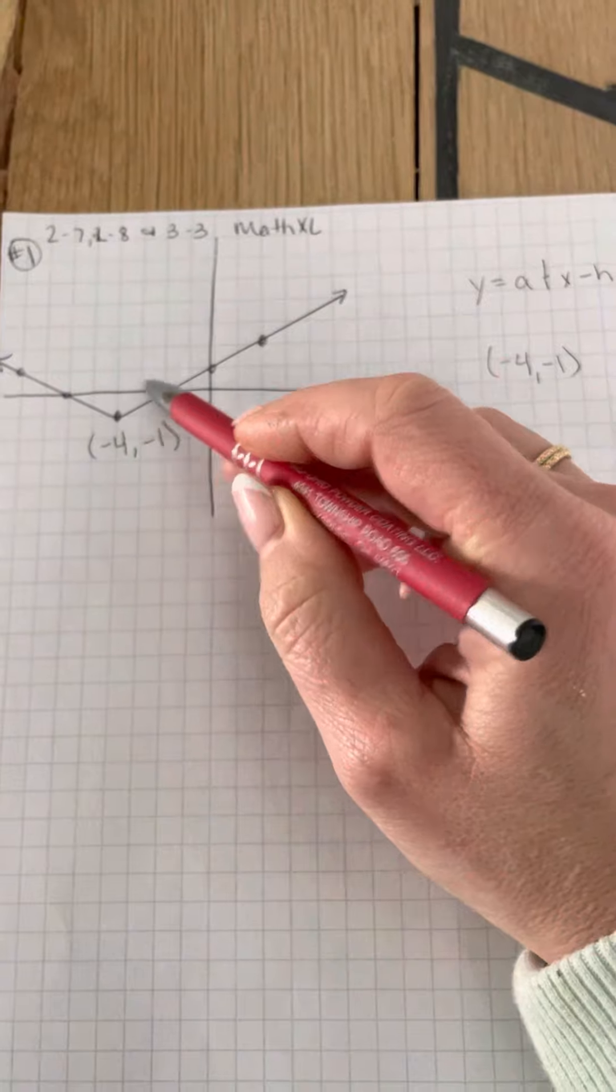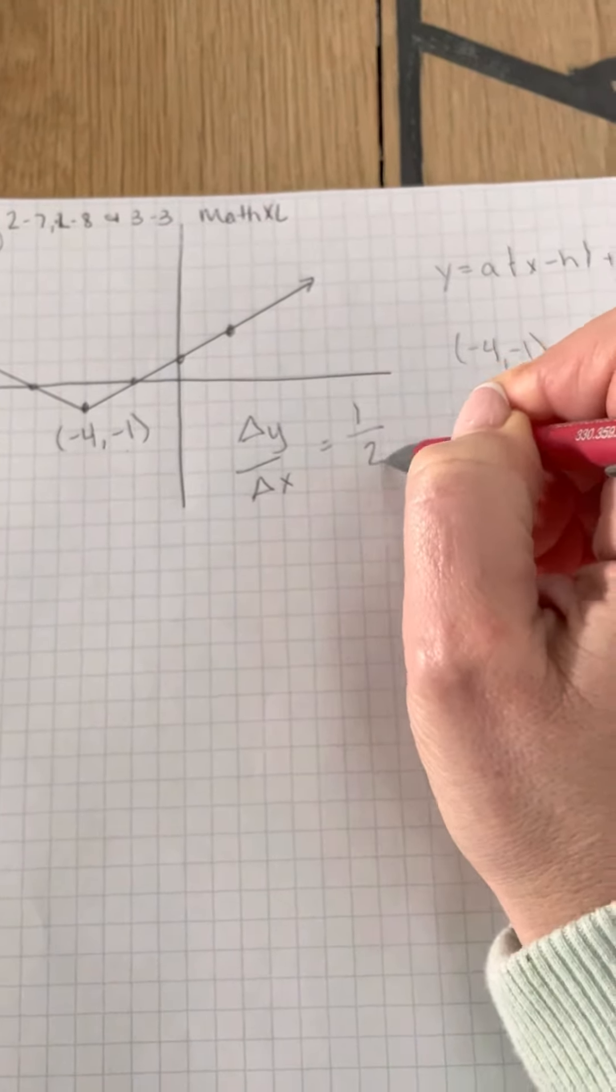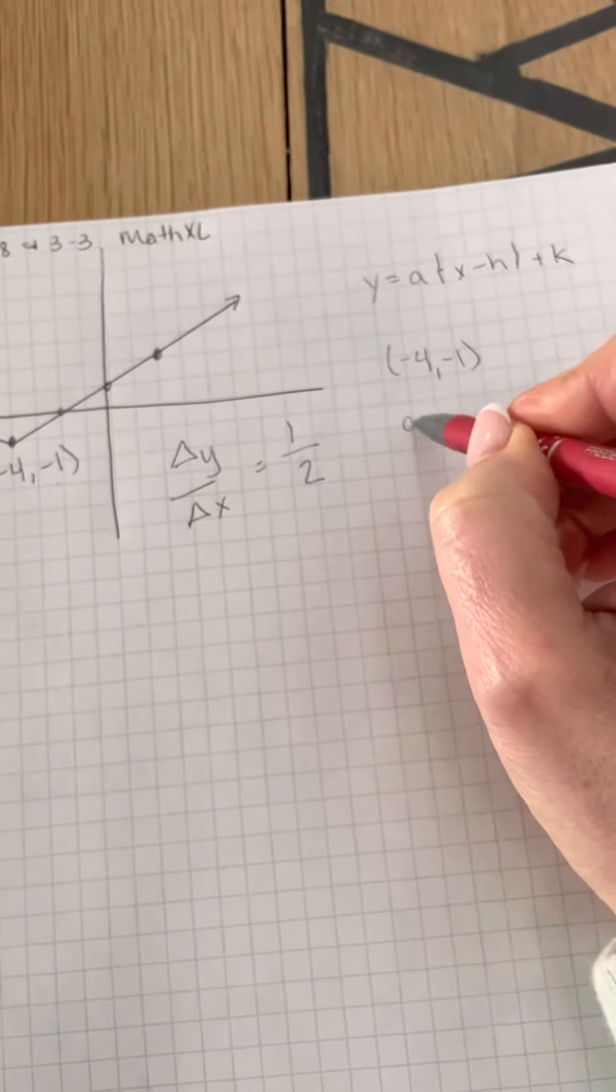over two, two is on the bottom. So it's one half. So A is going to be one half.